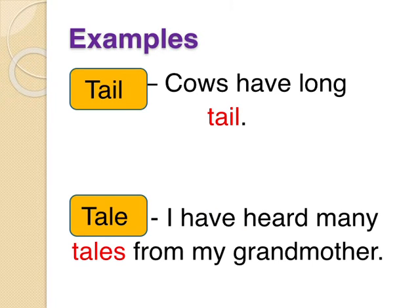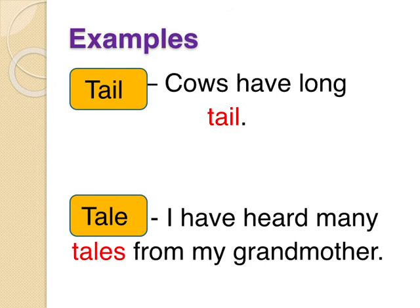Now, 'tail' and 'tale'. T-A-I-L 'tail' — as in 'The cows have a long tail' — hum gaay ki pooch ke baare mein baat kar rahe hain. And T-A-L-E 'tale' means 'I have heard many tales from my grandmother' — tales means stories. So see T-A-I-L and T-A-L-E — there are many such similar words too.